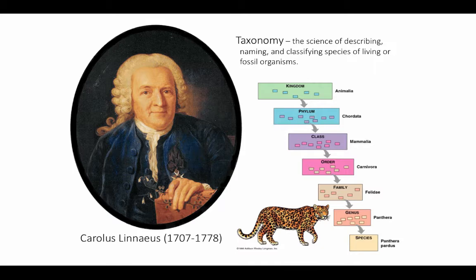Basically, individuals that are very similar to each other are grouped together in the same species, which may have subspecies that are somewhat differentiated but still form an interbreeding group of organisms. Species that are very similar to each other get grouped together in the same genus. Genera that are very similar to each other get grouped together in the same family, and so on up the ladder, until we can classify basically all of the organisms in the world in this way.